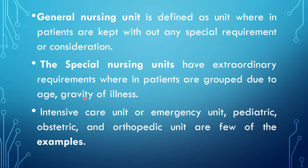Examples of special nursing units include intensive care units, emergency care units, pediatric units, obstetric units, orthopedic units, etc. In these special care units, patients are grouped according to their age, gravity of illness, or many other factors, and they have extraordinary requirements. In a general nursing unit, they don't have any special requirement or consideration.